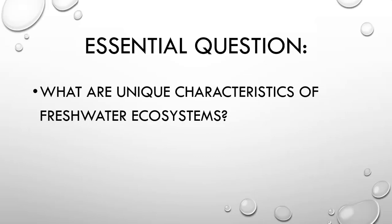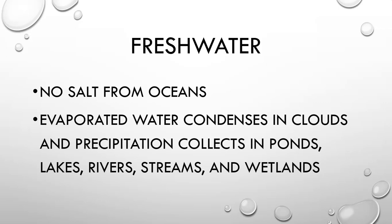Your essential question: what are the unique characteristics of freshwater ecosystems? First of all, what is freshwater? Freshwater means there's no salt from the ocean. Ocean water has a 3.5% salt content. Freshwater is created by precipitation. When evaporation happens, only water goes into steam and condenses into clouds. Eventually those clouds will rain, and that precipitation will hit the ground and collect in ponds, lakes, rivers, streams, and wetlands — those are your freshwater ecosystems.